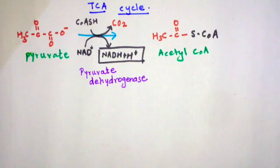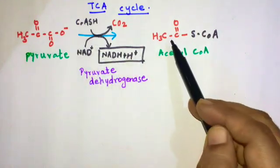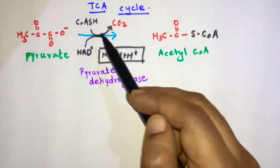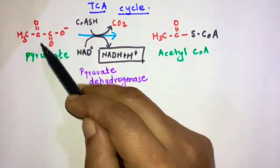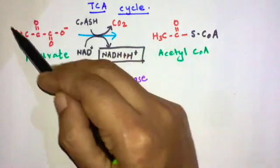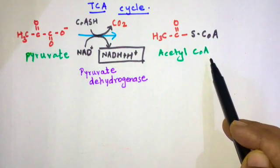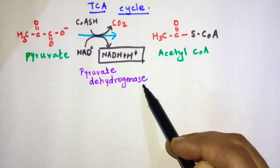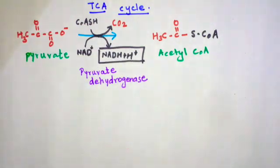In this video I'll be discussing the TCA cycle. Pyruvate, which comes from glycolysis, is converted to acetyl coenzyme A in the very first step. Coenzyme A is attached to the pyruvate, CO2 goes out, and acetyl coenzyme A is formed. This reaction takes place with the help of pyruvate dehydrogenase, and NAD+ is converted to NADH and H+.